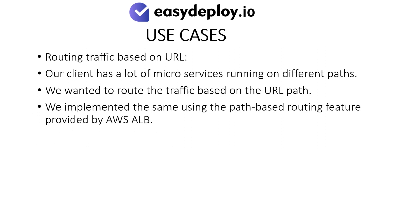Routing traffic based on URL. Our client has a lot of microservices running on different paths. We wanted to route the traffic based on the URL path. We implemented the same using the path-based routing feature provided by AWS ALB.